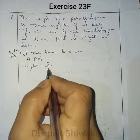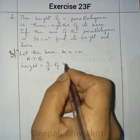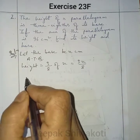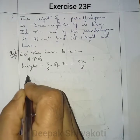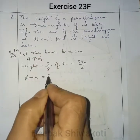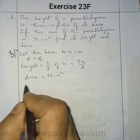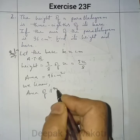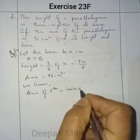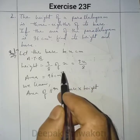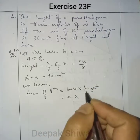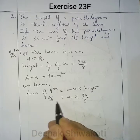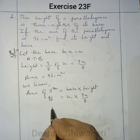According to the question, height will be three-eighths of base. Since the base is X, the height will be equal to 3X by 8. Now, the area is also given as 96 centimeters square. We know the area of a parallelogram is given by base into height. So base is X centimeter and height is 3X by 8.